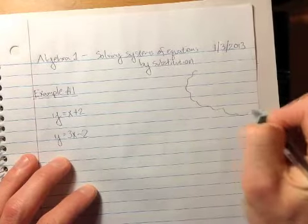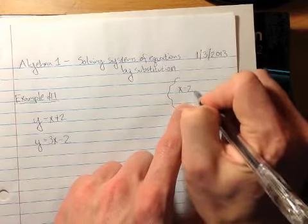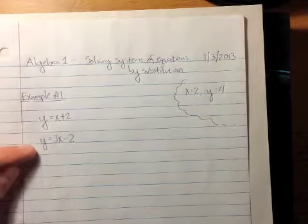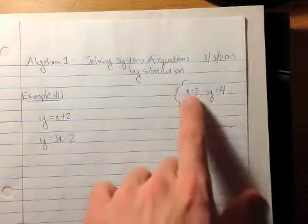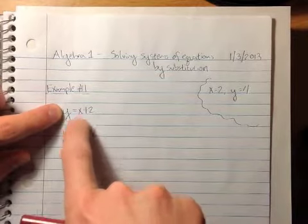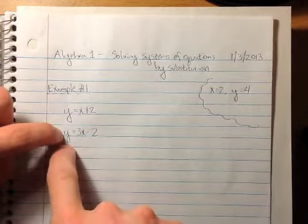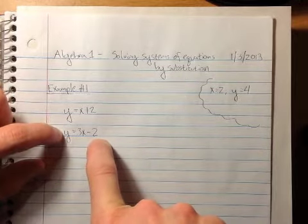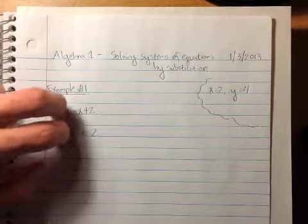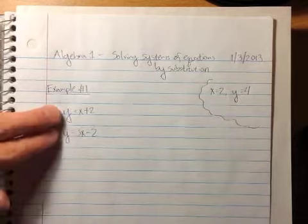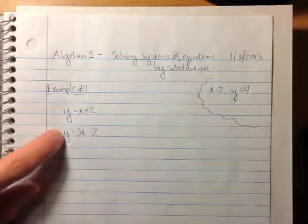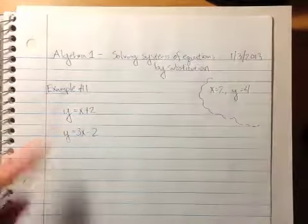Over here, let's put this in a box — the solution was x equals 2 and y equals 4. Now in this video I'm going to teach you another way to solve this system of equations by a method called substitution, and we're going to try to find the same exact answer. Now let's think about what these two equations say. If y equals x plus 2, and this equation says that y also equals 3x minus 2, isn't it true that x plus 2 equals 3x minus 2, since they're both equal to the same thing, y? Yes, absolutely, that is true. And that is the idea of substitution — in one equation, you can substitute the y for what y is equal to according to the other equation.